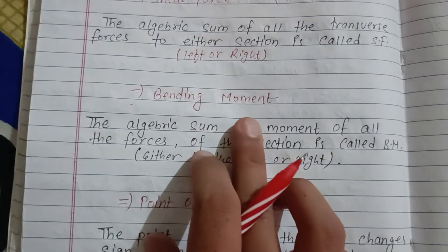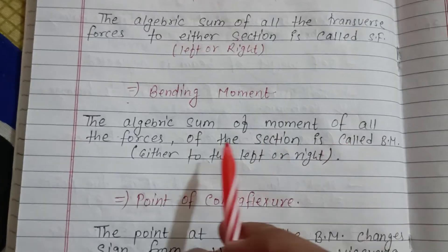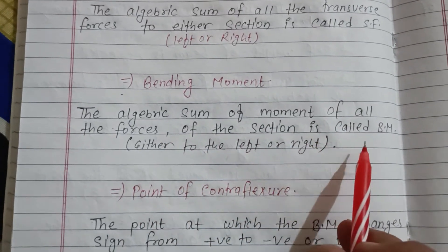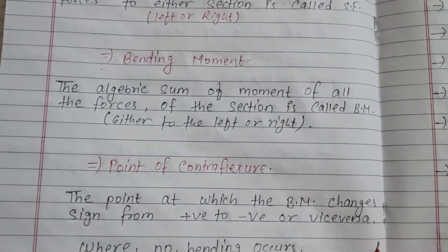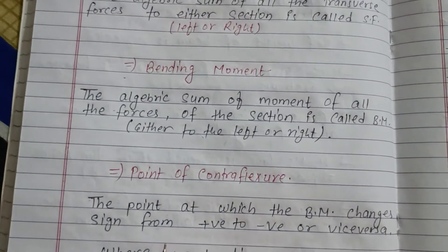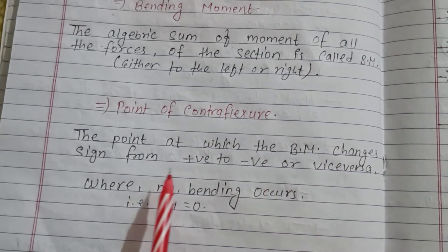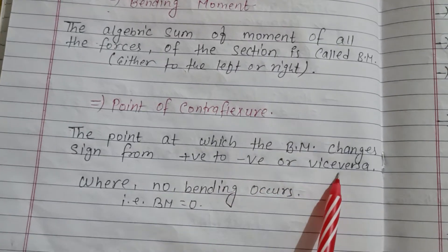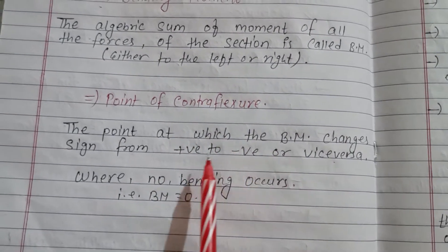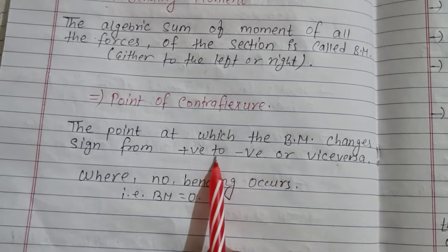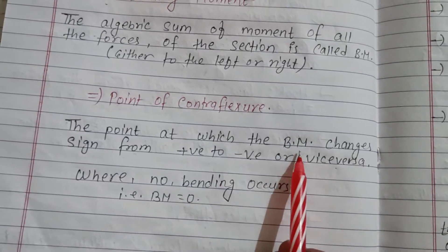Bending moment: the algebraic sum of moments of all the forces about the section, either left or right, is called bending moment. The point at which the bending moment changes sign from positive to negative or vice versa is called the point of contraflexure.